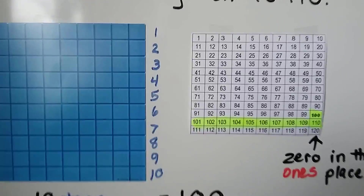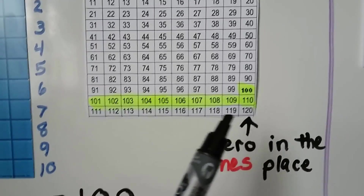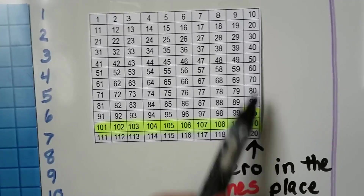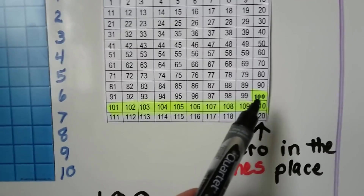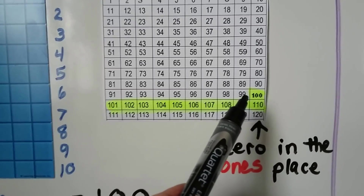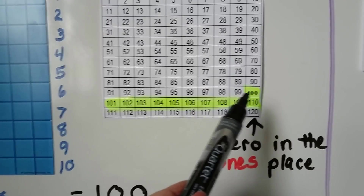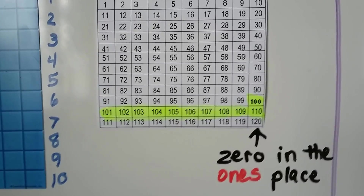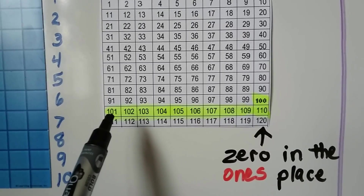When we look at our chart, we can find the 100. It ends with a zero in the ones place, so it's going to be in this column with the other numbers that have a zero in the ones place. We can see that it's one more than 99. The nine in the ones place became a zero, and the tens became one more. It went from a nine to a ten. That gave us a one, zero, and a zero — a 100.